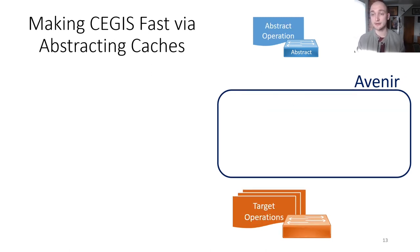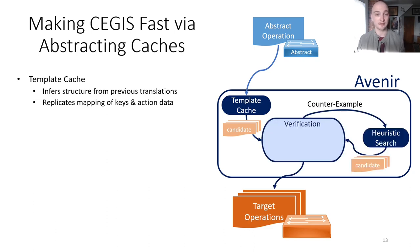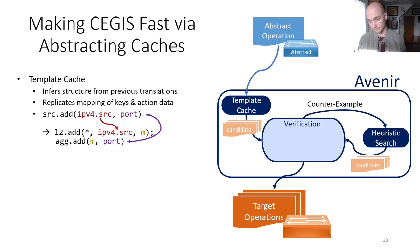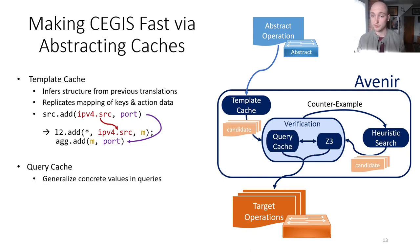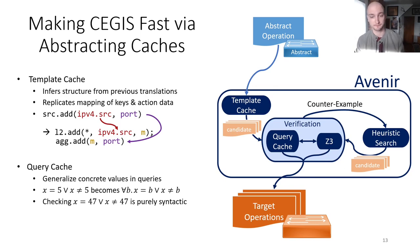We also make use of abstracting caches to amortize the cost of our expensive search and verification algorithms. The first abstracting cache is a template cache that heuristically infers the structure from previous translations — such as what tables or actions were used — and reproduces the mapping of keys and actions to produce a candidate solution passed to the standard CEGIS algorithm. Recall the source table mapping example from before: the template cache optimistically copies the source address and port value, and mints new metadata values to link the rows, which completely bypasses the heuristic search scheme. Similarly, the query cache universally quantifies over constants in valid queries. When we conclude that a formula like x equals 5 is valid, we also check that for all b, x equals b is valid. If it is, we remember the formula in the query cache, so that checking future formulae like x equals 47 becomes purely syntactic. These two caches compose to provide a fast path that bypasses the expensive search and verification stages.